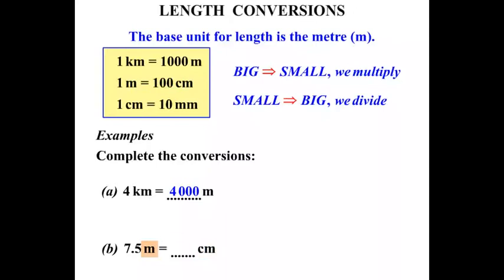We're changing from meters to centimeters, from something bigger to something smaller. So we multiply by that hundred. And 7.5 times 100 equals 750.